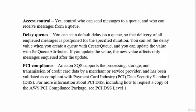With SQS you can control who can send and receive messages from a queue. You can set a default delay on a queue so delivery of all enqueued messages is postponed for a specific duration, configurable at creation or updated with SetQueueAttributes — the new value affects only messages enqueued after the update. Amazon SQS is PCI DSS compliant, supporting the processing, storage, and transmission of credit card data by merchants or service providers.